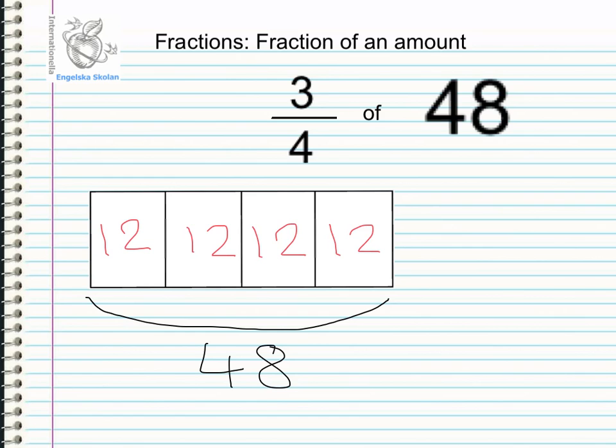Using the concept which we have already talked about we can see that three quarters is the same as one quarter plus one quarter plus one quarter. So I want to take three out of the four quarters and put them together to find my answer.